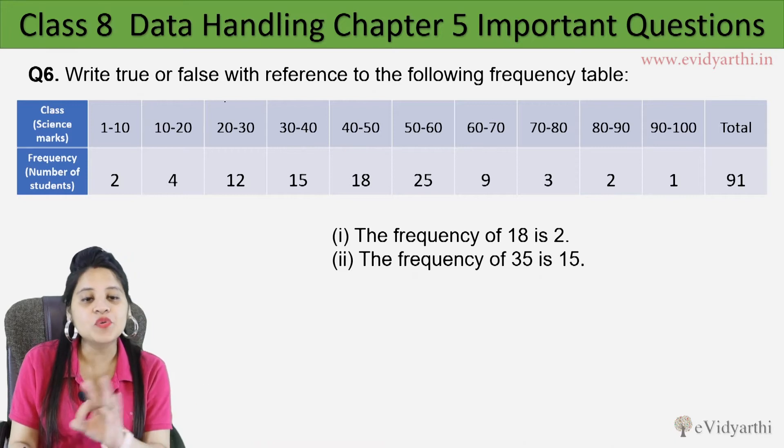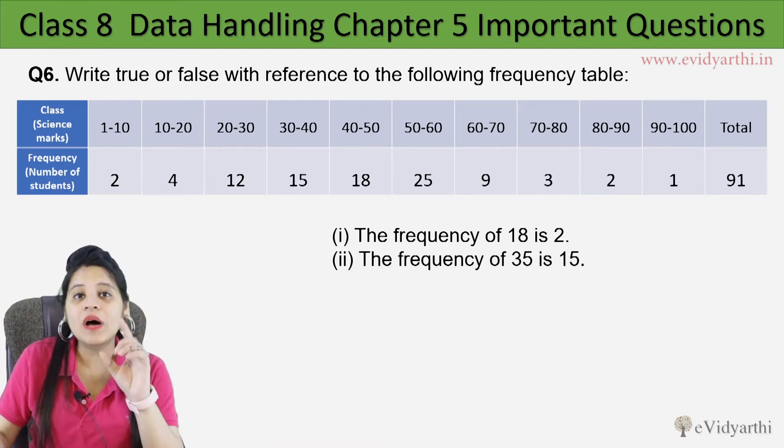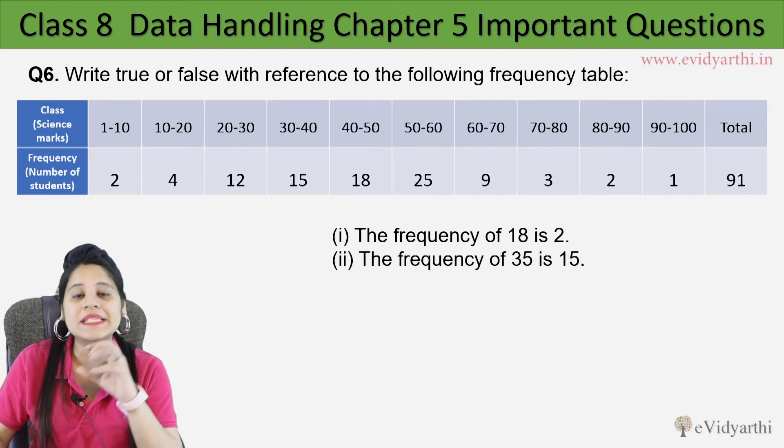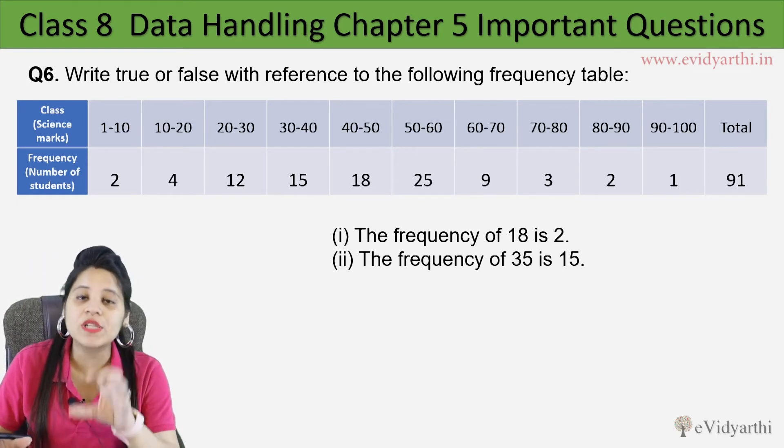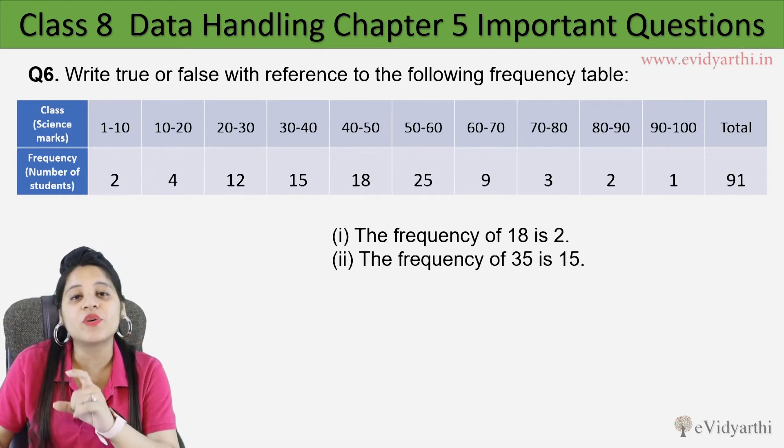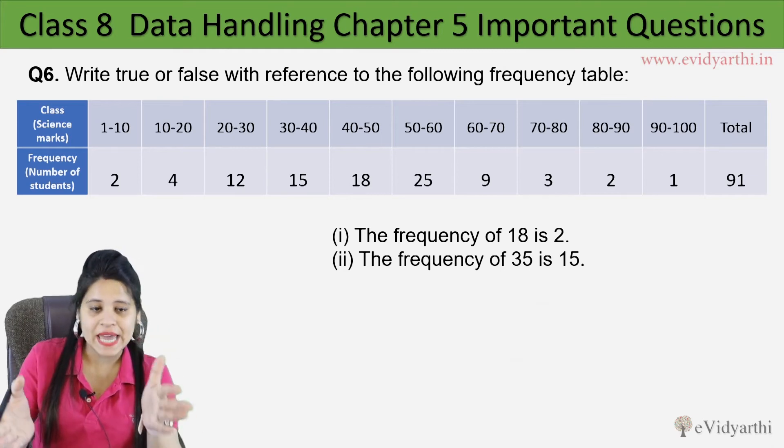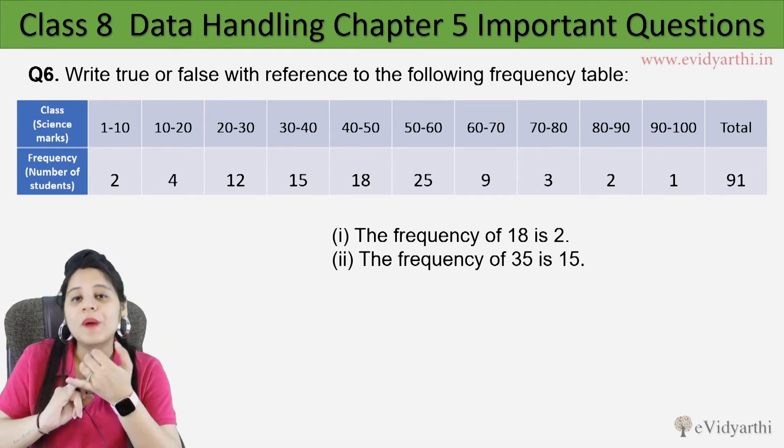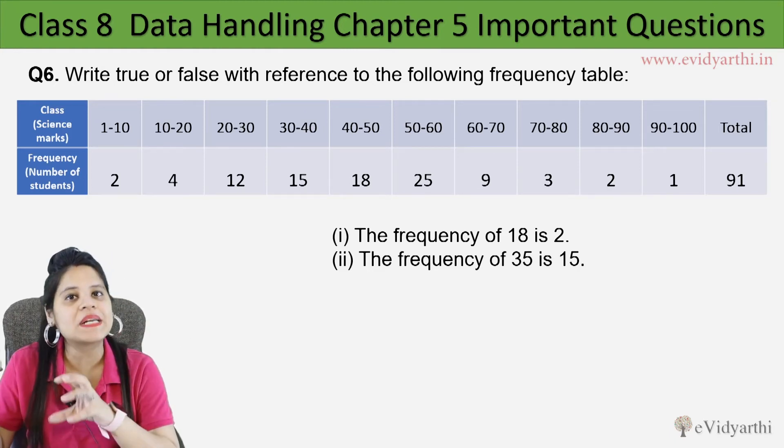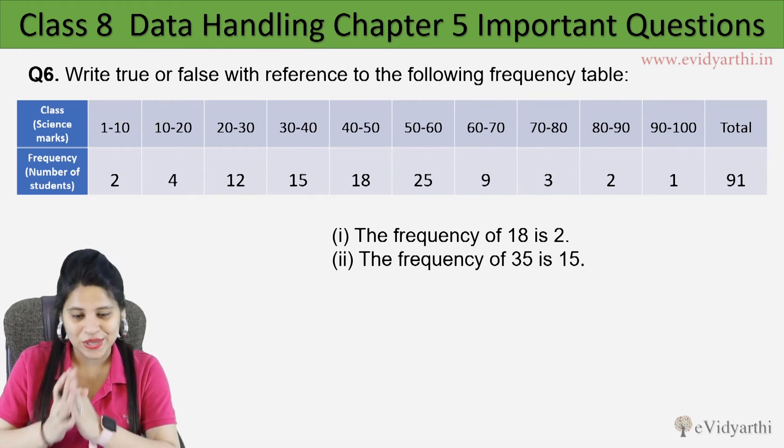Question number 6 is write true or false with reference to the following frequency table. Now the reason I have taken this question is basically that there are so many parts here. This is why you will understand how to read a frequency table. What will happen to this type - you can say pie chart, bar graph, histogram. So if you have to read a frequency table, you will have to make something from this.